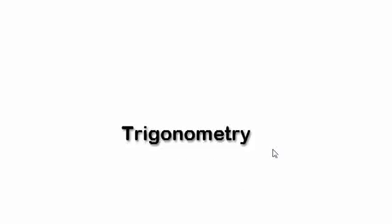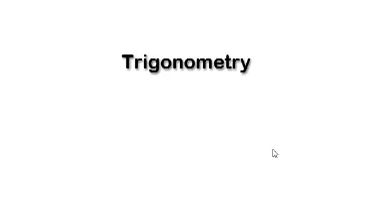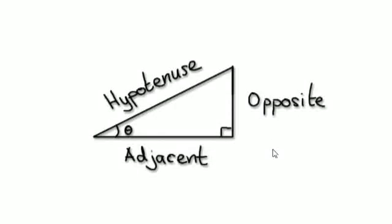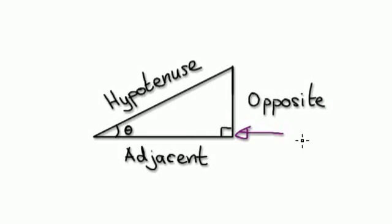Now we're going to move on to a new chapter: trigonometry. With trigonometry, you're mainly dealing with triangles. Remember, trigonometry only works if your triangle has a 90-degree angle. So this angle here has to be 90 degrees.